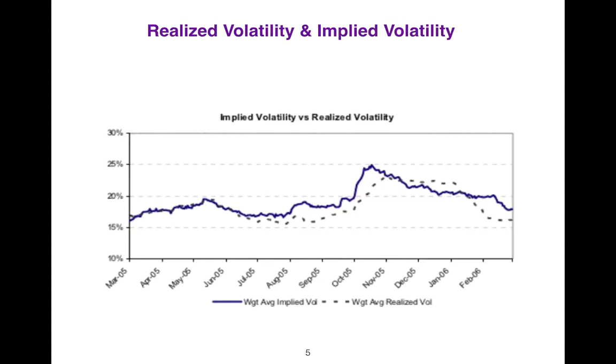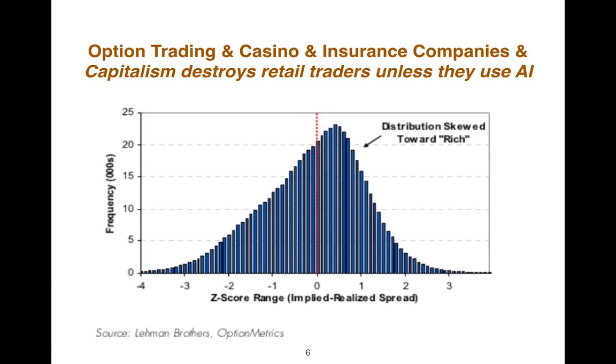It's interesting that data shows it has a mean reversion property, and we can take advantage of that as well. As you see, the distribution is skewed toward right—we are paying more premium for options.